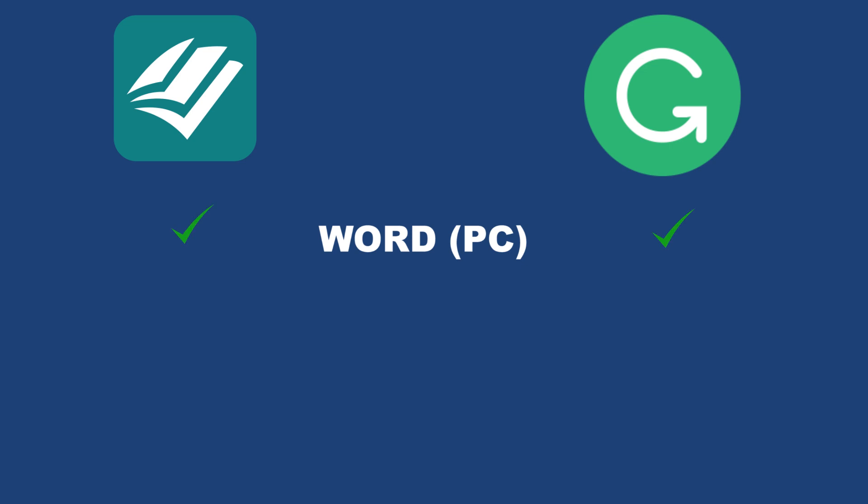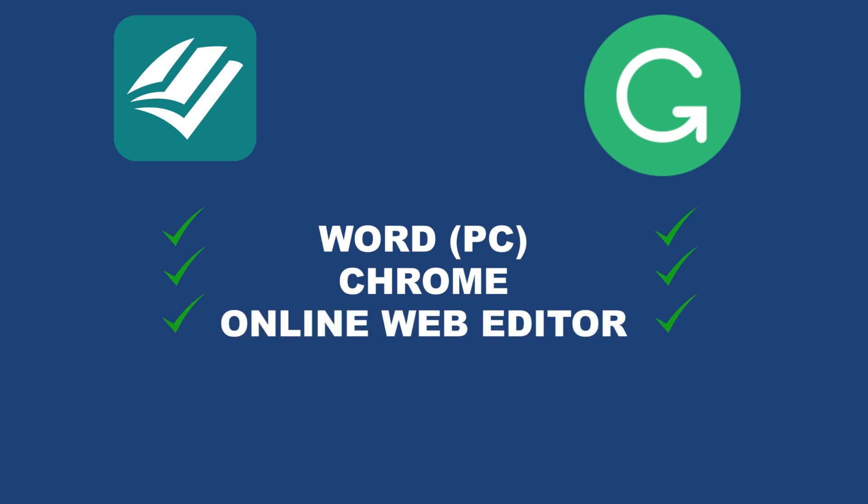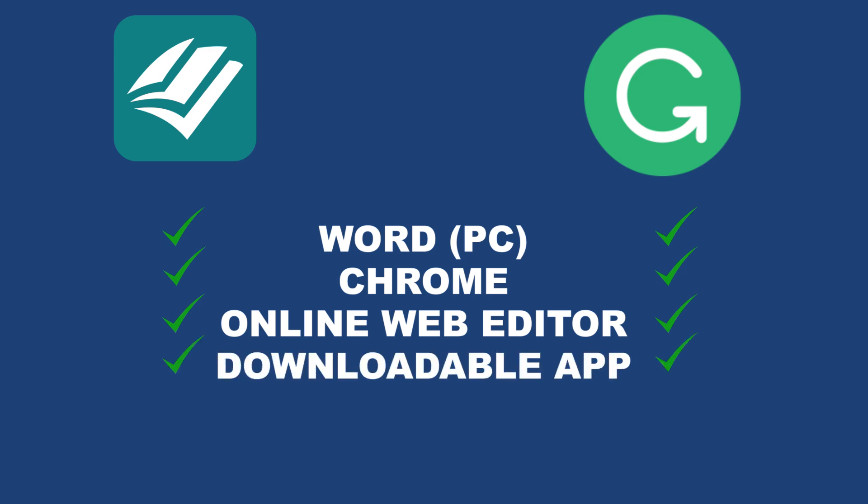To start off, both ProWritingAid and Grammarly have a Word integration plugin. However, this is only for Windows Word, not Mac Word — which is frustrating. Also, both of them have a Chrome plugin which allows them to check your grammar and spelling when you're on Facebook, Twitter, writing a Gmail, any of that. They both have an online web editor where you can go ahead and write your documents and check them there, and they both have a downloadable app as well.